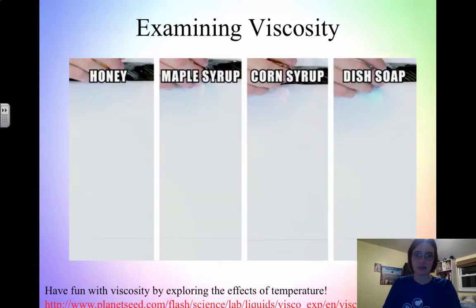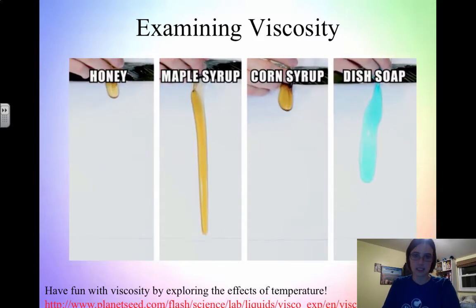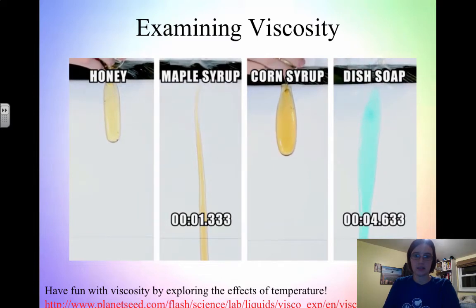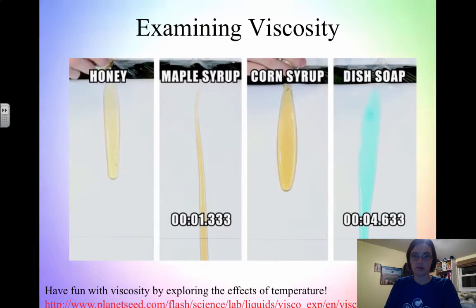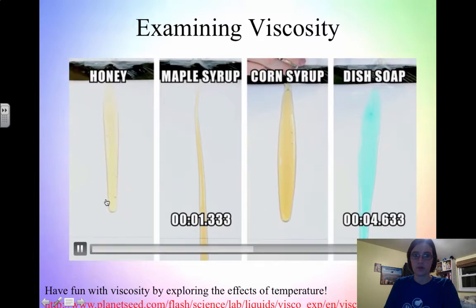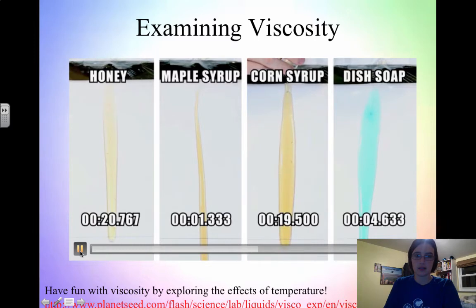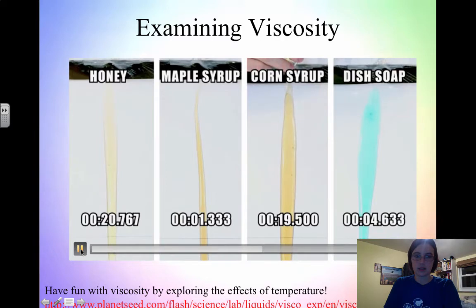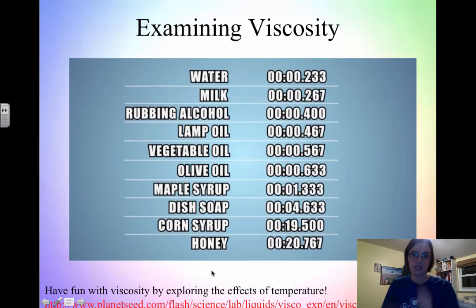In the final heat of the race, we're racing honey, maple syrup, corn syrup, and dish soap. First across the finish line is maple syrup with a time of 1.33 seconds, followed by the blue dish soap with a time of 4.633 seconds. Then the grape corn syrup crosses the line at 19.5 seconds, and finally honey at 20.767 seconds. So honey has the highest viscosity — it's hardest for the honey to flow.